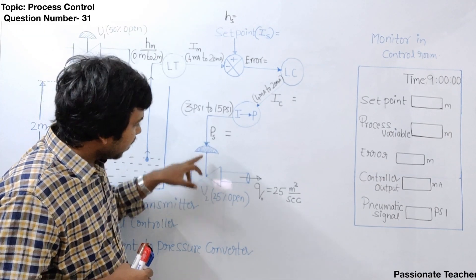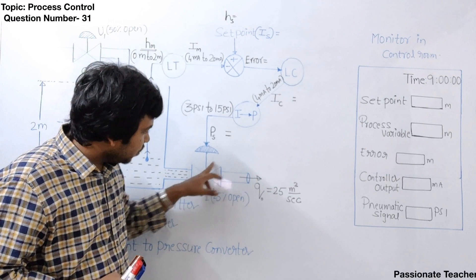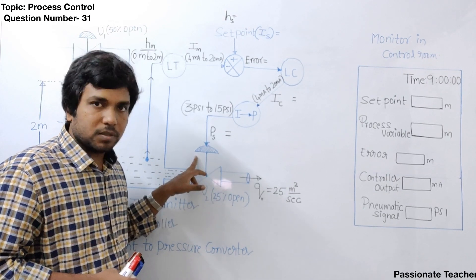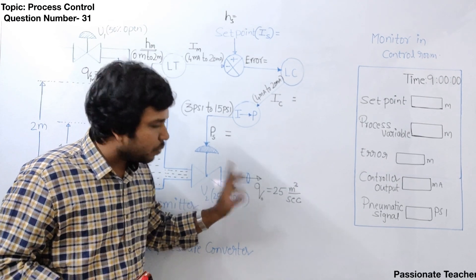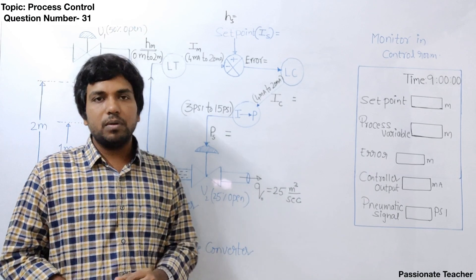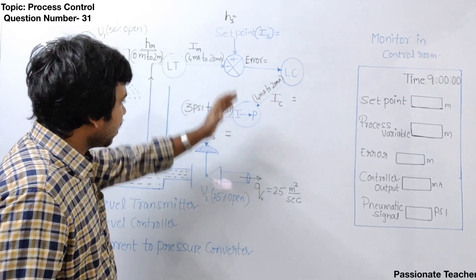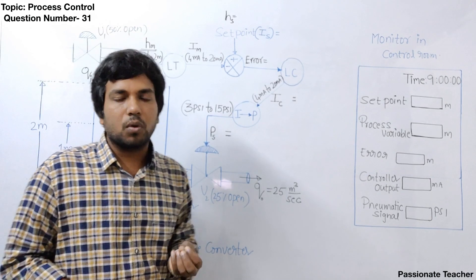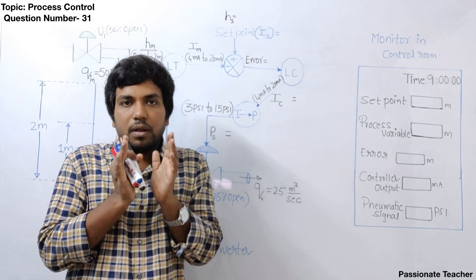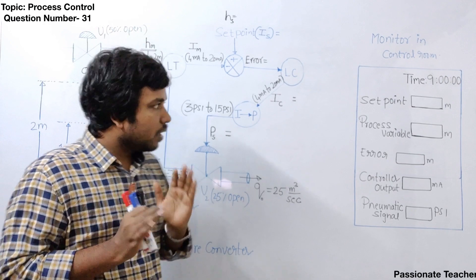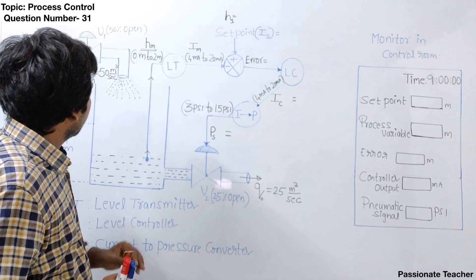When pressure is applied to the pneumatic control valve, the valve will be opened or closed depending upon the pressure applied. When the valve position or valve opening is changed, the output flow rate will automatically change. This is how all these devices are connected together to form the closed loop control system.